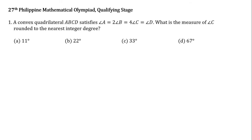Question number 1. A convex quadrilateral ABCD satisfies the condition that angle A is equal to twice angle B, twice angle B is equal to 4 times angle C, and 4 times angle C is equal to angle D. What is the measure of angle C rounded to the nearest integer degree?